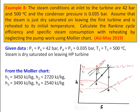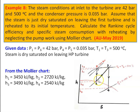For constant entropy, draw a vertical line. The condition is the steam is dry saturated on leaving the HP turbine, so draw the vertical line and stop on the saturation line — this is point 2. The enthalpy H2 = 2720 kJ/kg. Along the pressure line, move to where it intersects at 500°C — this is point 3, and H3 = 3490 kJ/kg. From point 3, the steam expands in the low pressure turbine — draw a vertical line to meet the condenser pressure P4 = 0.035 bar, which is below the saturation line. H4 = 2540 kJ/kg.